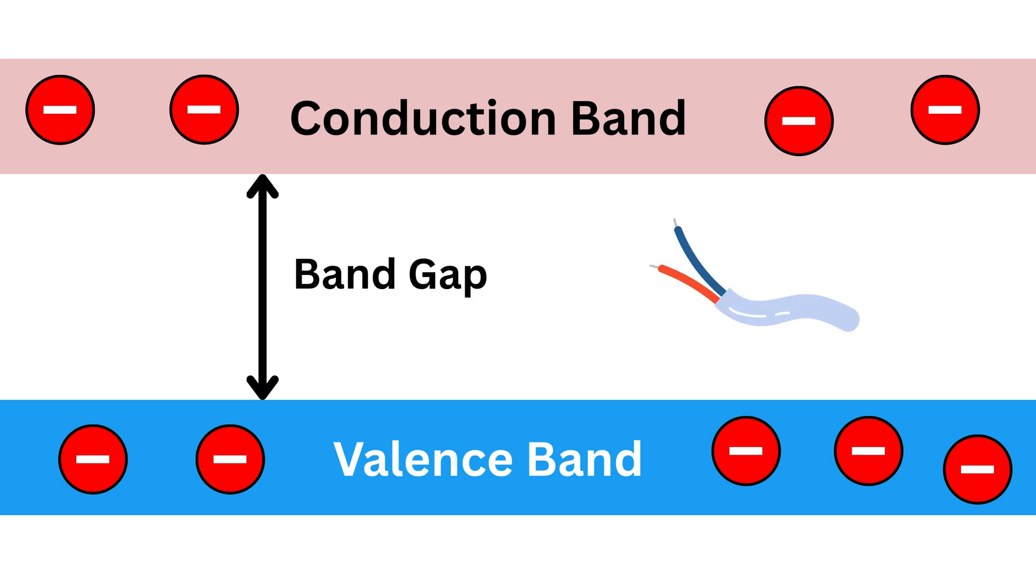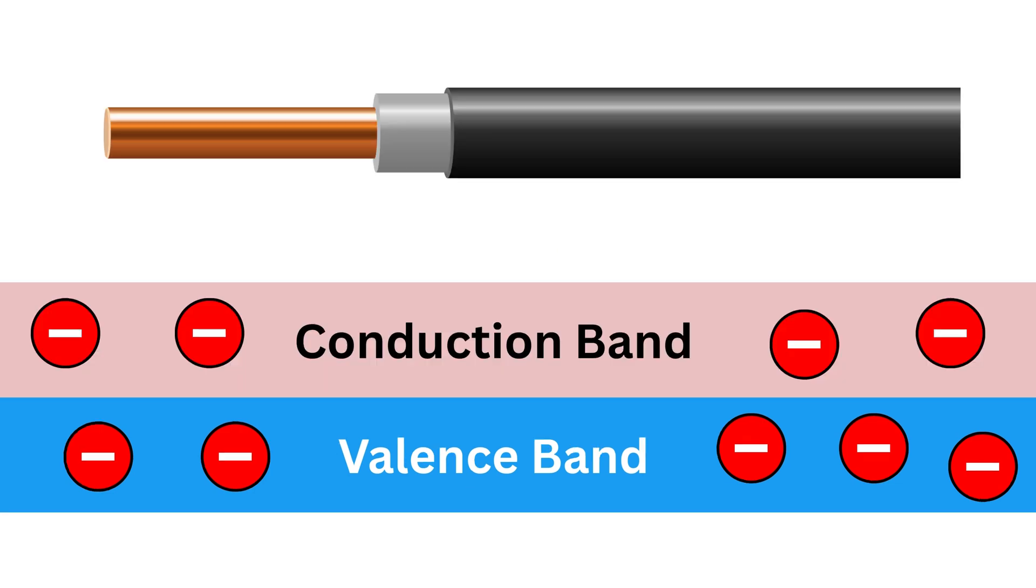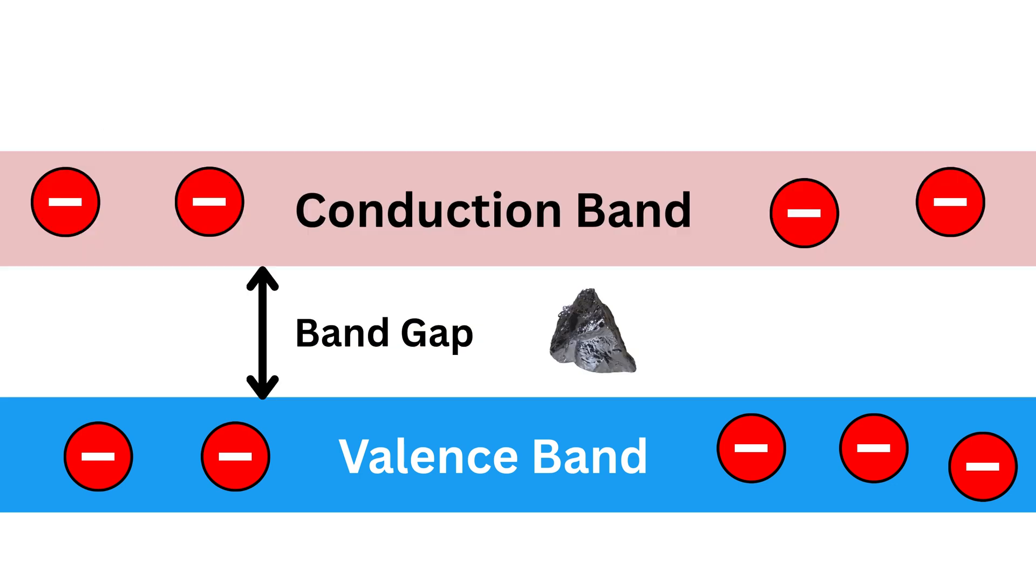In the case of insulators, this gap is very large, so electrons can't easily jump across and therefore they cannot conduct electricity. For conductors, there is no gap at all—electrons can move freely as the bands overlap. But for semiconductors like silicon, the gap is moderate—not too small and not too big, just right to control. At room temperature, very few electrons naturally get the energy to jump from the valence band up to the conduction band. That's why pure silicon is not a good conductor. We need a way to get more electrons up there in order to improve conductivity.